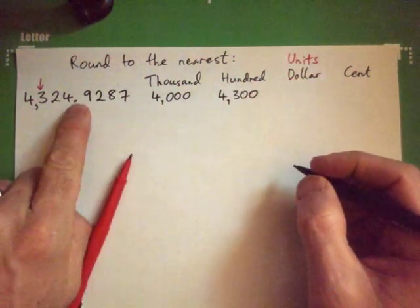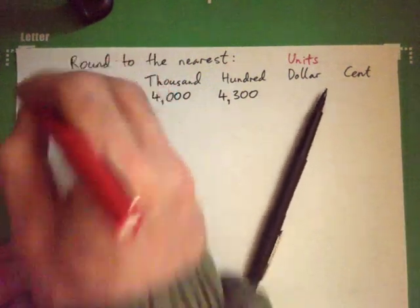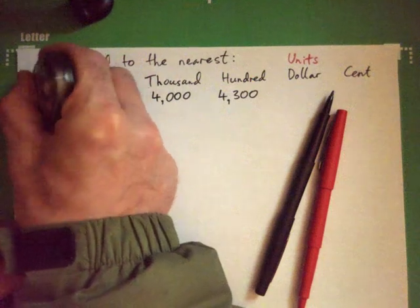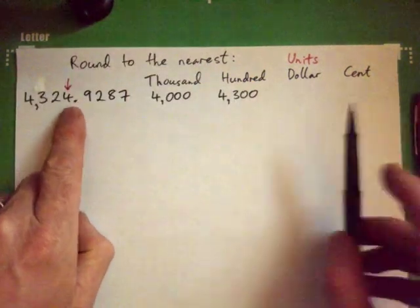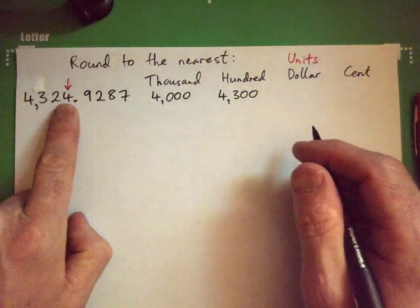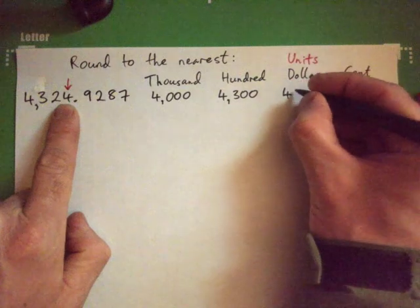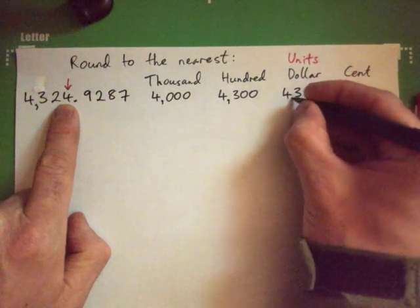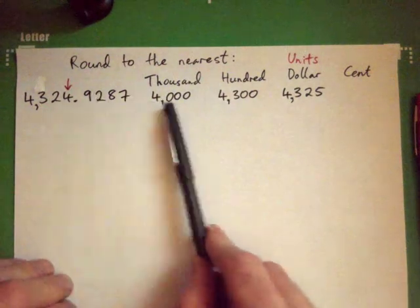Now to the nearest dollar — to the nearest dollar, you've got to get it to this spot. The dollars occur here, so take your time. What is it to the nearest dollar? It's 4,325. I always think about rounding — it's almost the same, it's just a little off.